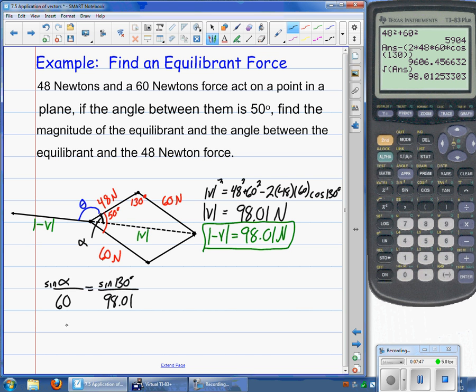So if we go ahead and solve this for sine alpha, I'm just going to work sideways here. We would just multiply both sides by 60, sine of alpha then equals sine of 130 degrees all over 98.01 times that by 60.